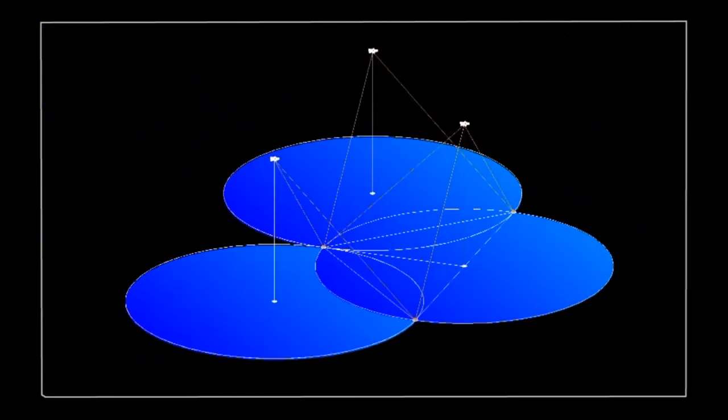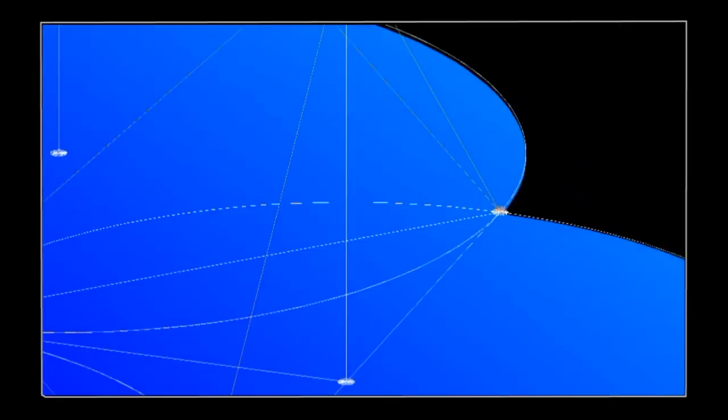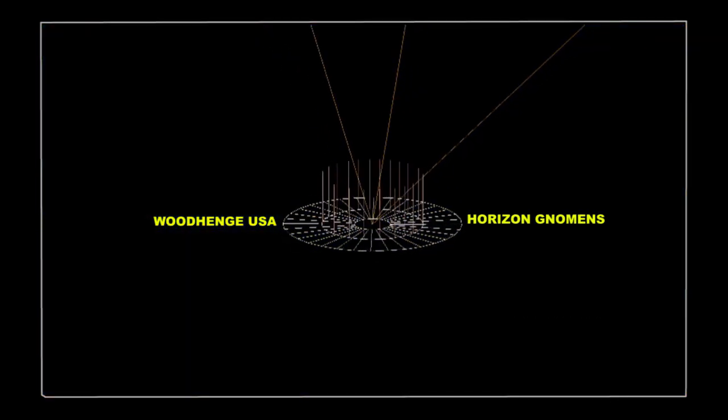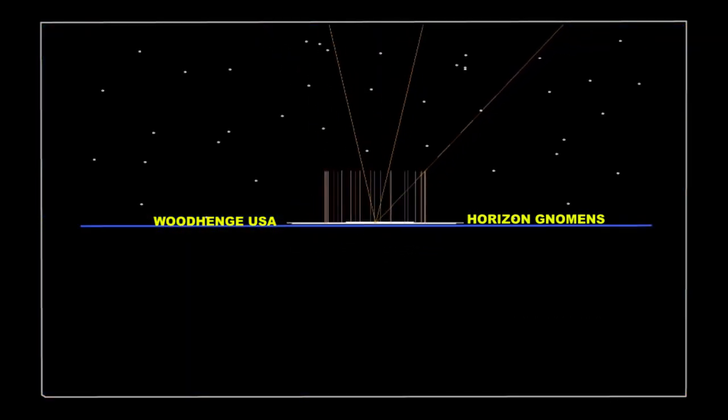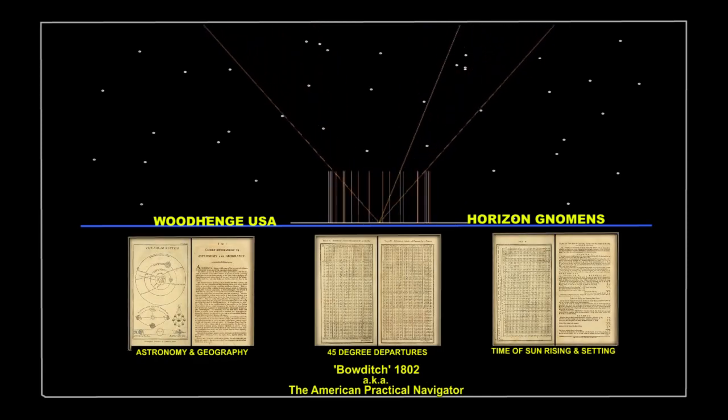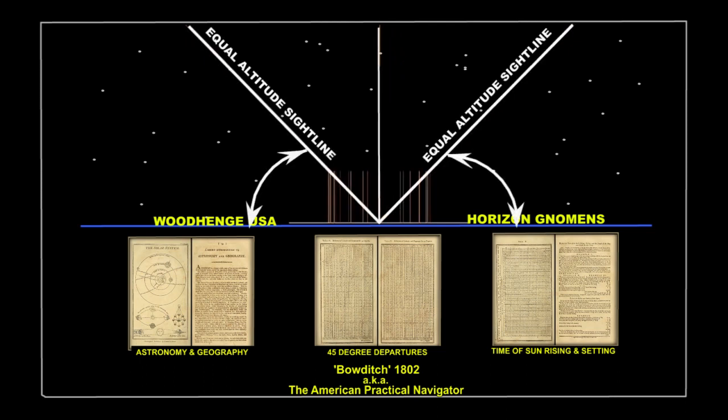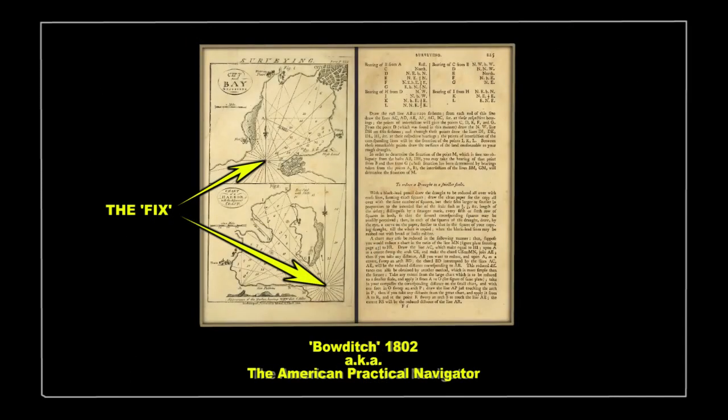This is how and why the gnomons at Stonehenge, Woodhenge, and Tiahuanaco were ingeniously configured and joined together, to ultimately allow for the creation of the first precise almanacs, terrestrial maps, and celestial charts to be produced on a global scale, by providing the means of recording and subsequently plotting each accurate fix.